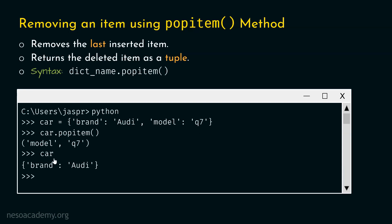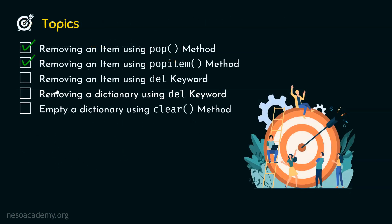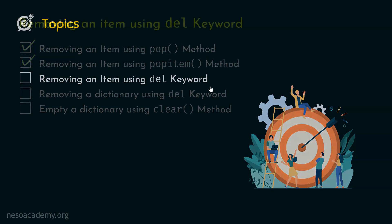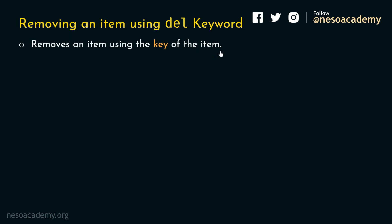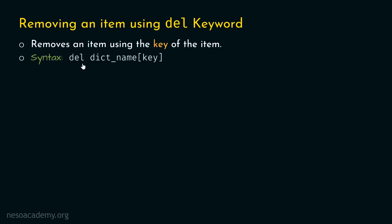Now let's move on to the next topic: removing an item using the del keyword. The del keyword removes an item using the key of the item, so it works similarly to the pop method, but it is a keyword, not a function. One important difference is that the del keyword never returns the deleted item, in contrast to the pop method.